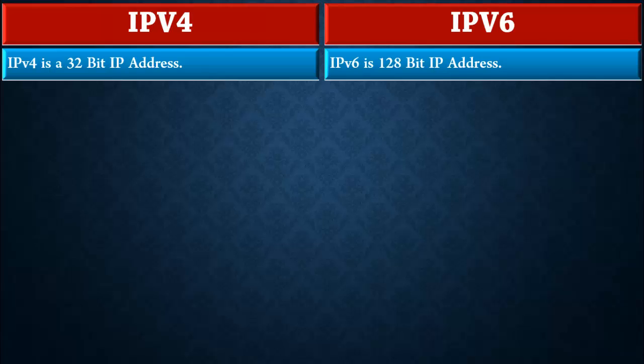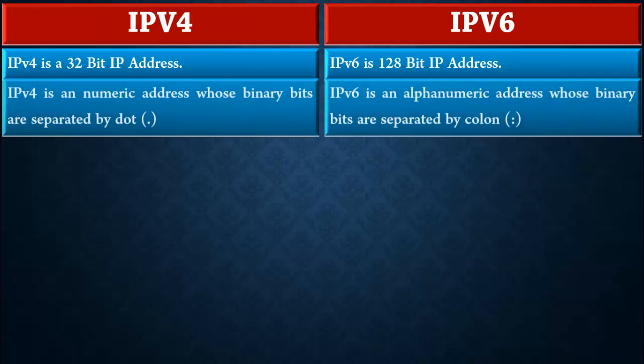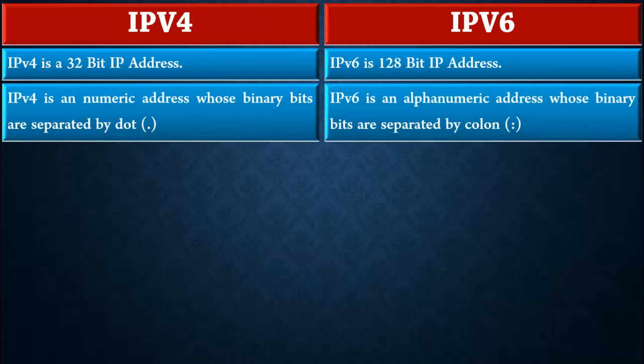IPv4 is a 32-bit IP address whereas IPv6 is a 128-bit IP address. IPv4 is a numeric address whose binary bits are separated by dot, whereas IPv6 is an alphanumeric address whose binary bits are separated by colon.